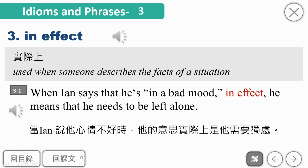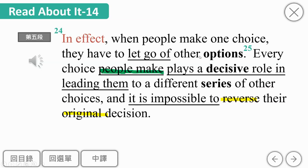Every choice people make plays a decisive role in leading them to a different series of other choices. 'people make'是省略that的形容词子句修饰every choice。play a decisive role，扮演决定性的角色，decisive是把原本的important或crucial换成更强烈的用词。lead A to B是把人们导向某个结果或情境，a different series of other choices就是不同的一连串选择。